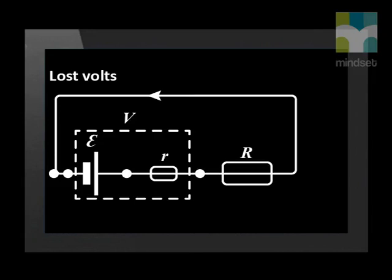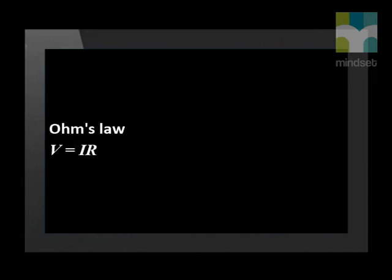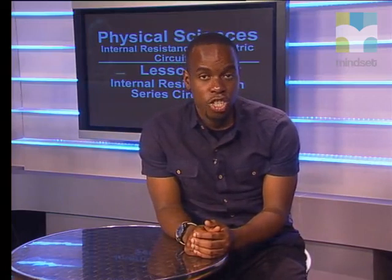The small drop or difference in the EMF is called V lost or lost volts. This means that to apply Ohm's law, V equals I times R, to circuits is more complex than the simple substitution of the correct values for V, I, or R into the formula. Just to be clear, the passage of charge through the cell and the internal resistance of the cell account for this loss of energy in the form of heat in the cell.